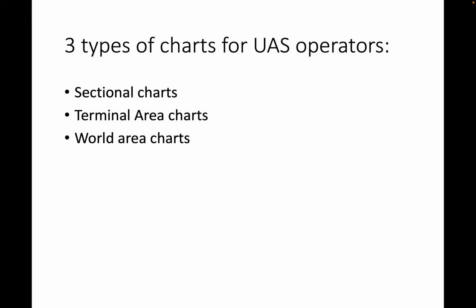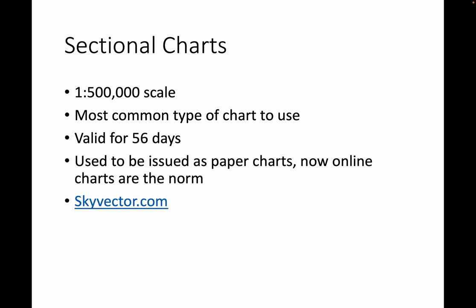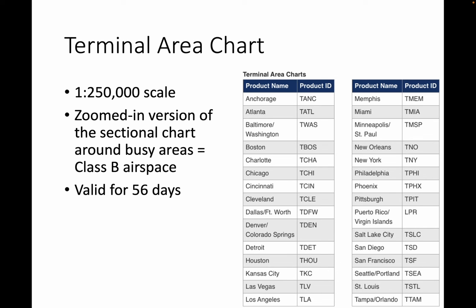There are three types of charts. Sectional charts are going to be the main kind of chart that we use. I'm going to SkyVector.com most of the time when I'm looking for information on the charts. The charts are updated every 56 days. Sectional charts are 1 to 500,000 scale — this is the basic chart we'll be using. The terminal area chart is for major airports, also valid for 56 days. These were important back in the days of paper maps when you needed a zoomed-in version, but aren't as important now for UAV pilots because we can zoom in on SkyVector.com as far as we need.